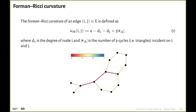Now to Forman-Ricci curvature: a quick overview of how it's calculated. You define a curvature per edge — a combinatorial formula essentially equal to four minus the degrees of the respective nodes plus three times the number of triangles incident on the two nodes. For our example graph, this gives low or negative curvature at some edges, whereas parts of cycles have almost flat curvature. It gives some insight into how the graph looks, but in this specific case it's not something where I'd say it makes intuitively much more sense than other measures.